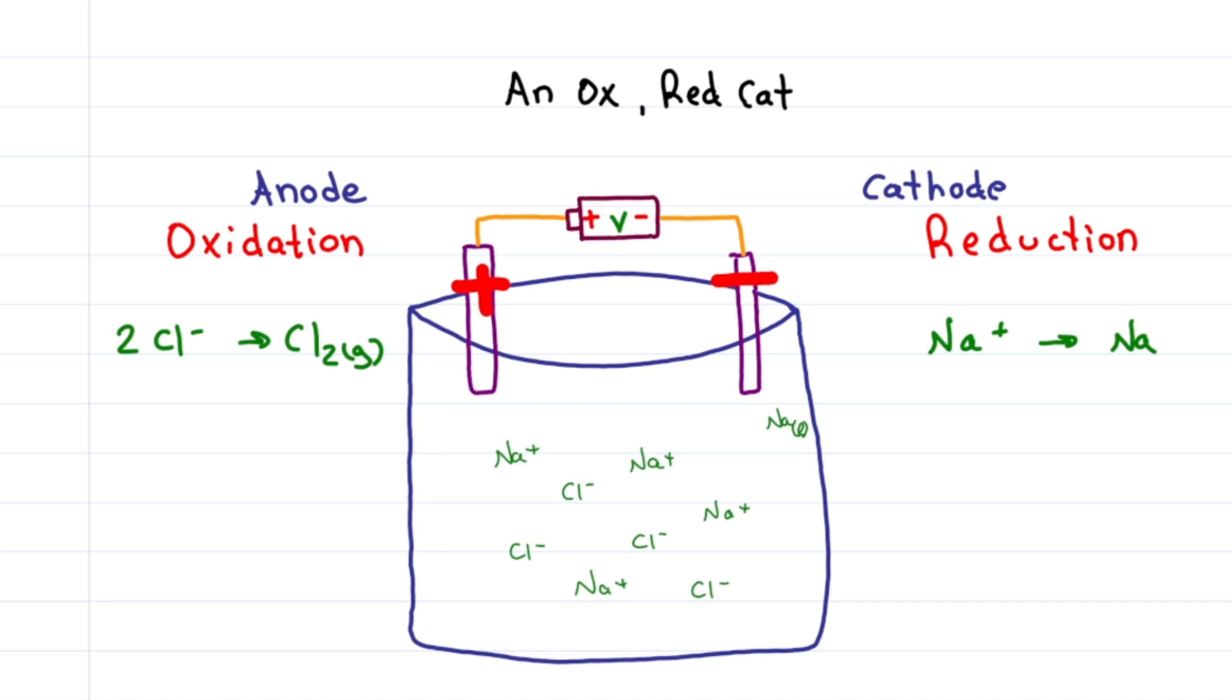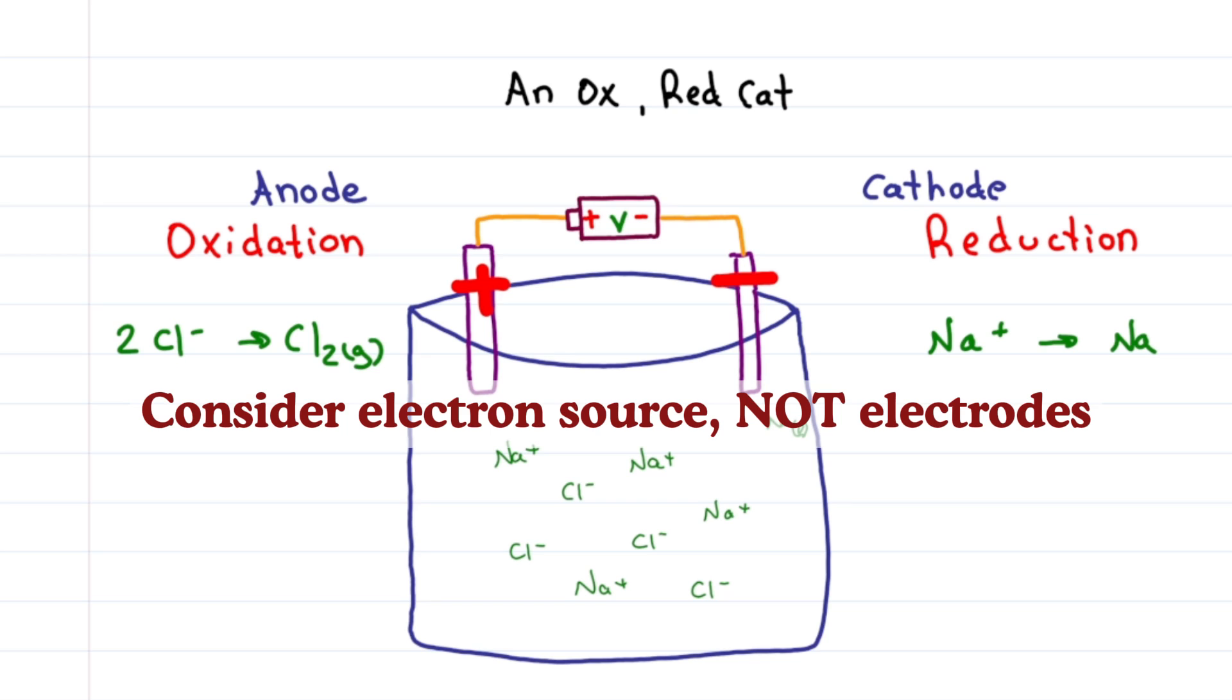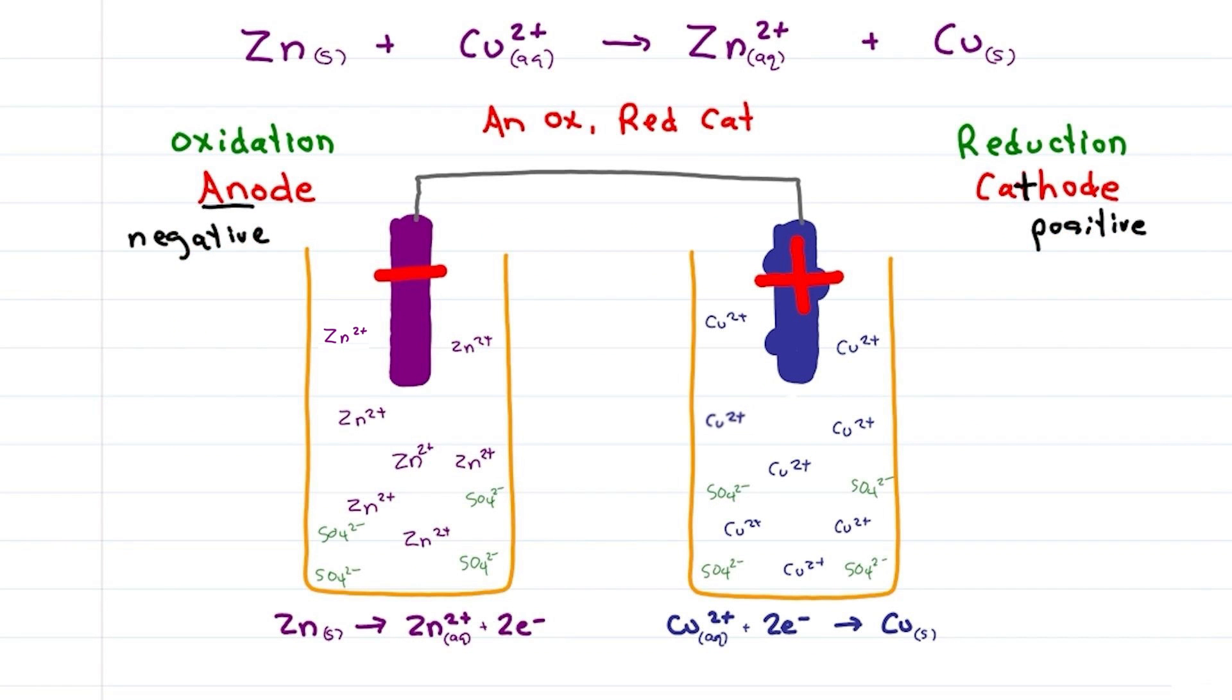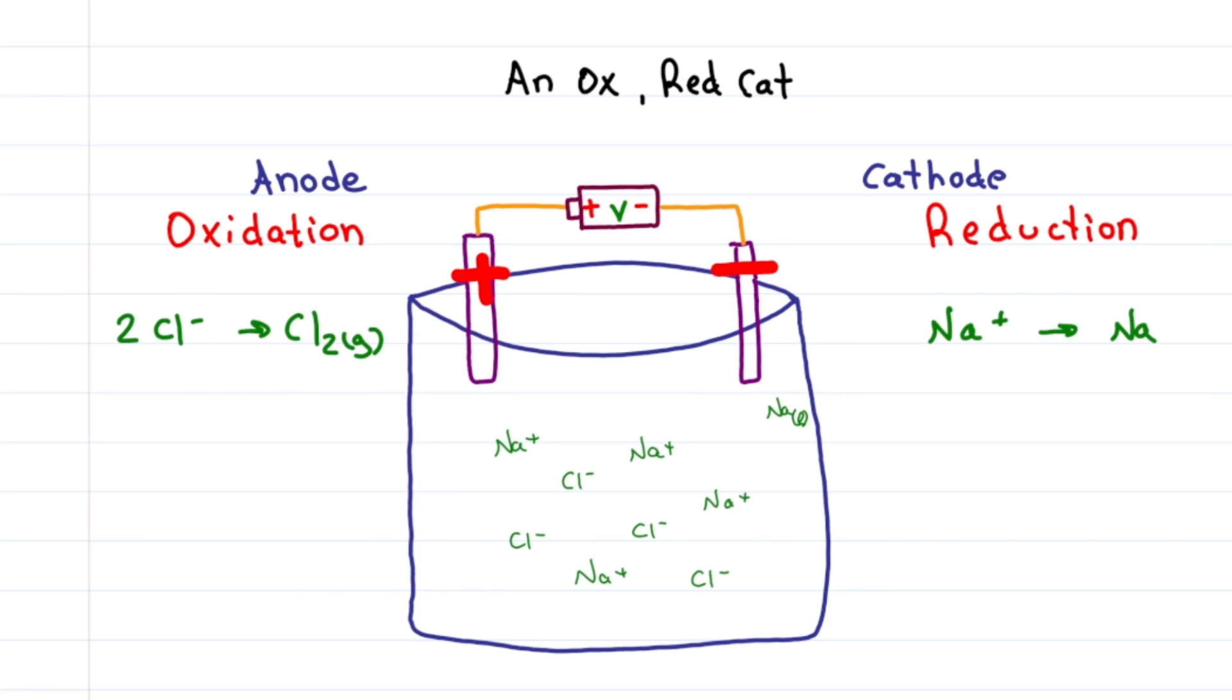This used to confuse me. The key is not to think of the electrode. Instead, think of where the electrons themselves come from. The source of spontaneous electrons is negative. The source that spontaneously accepts electrons is positive. We already saw how the anode was negative because it spontaneously gave up negative electrons and the cathode positive because it spontaneously accepted negative electrons or pulled cations towards itself. What's the spontaneous source here?